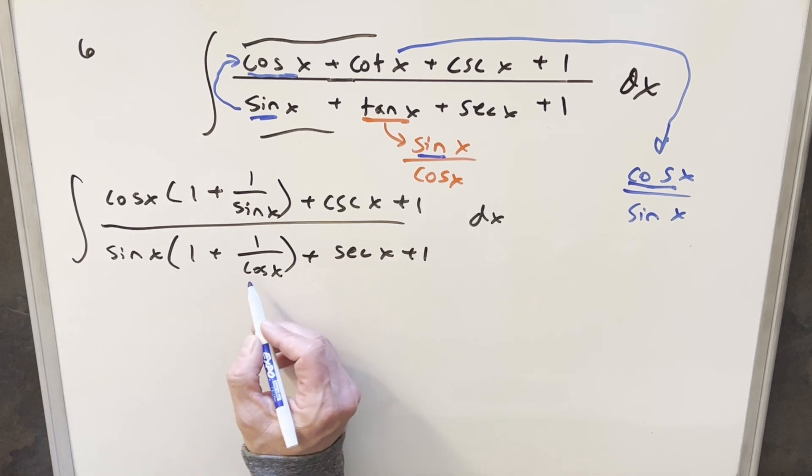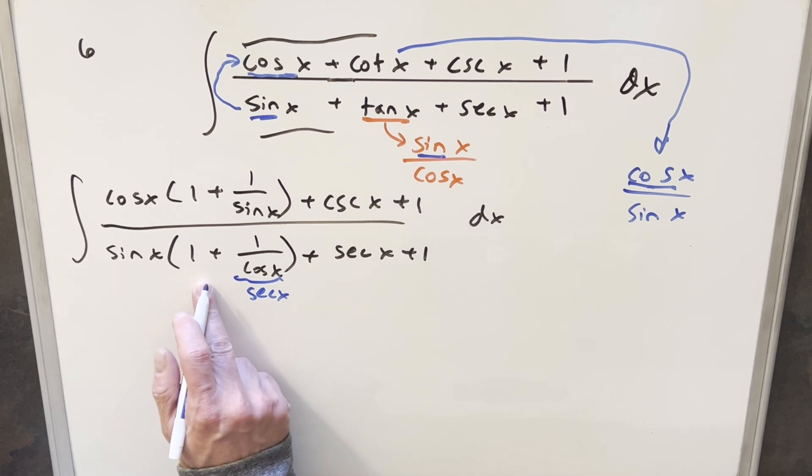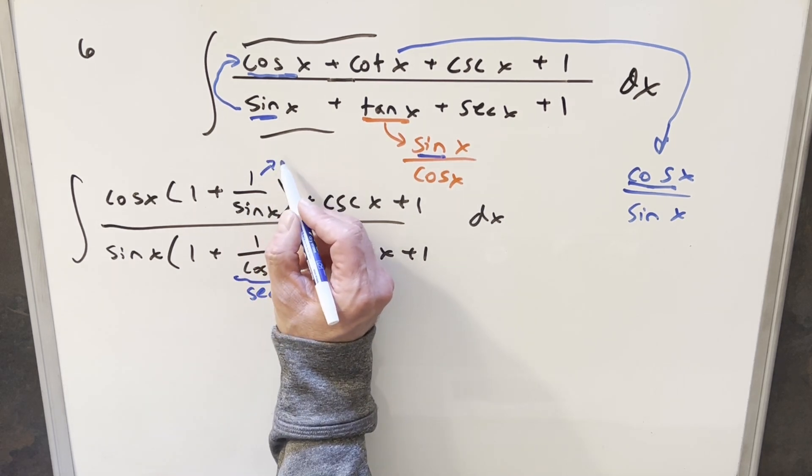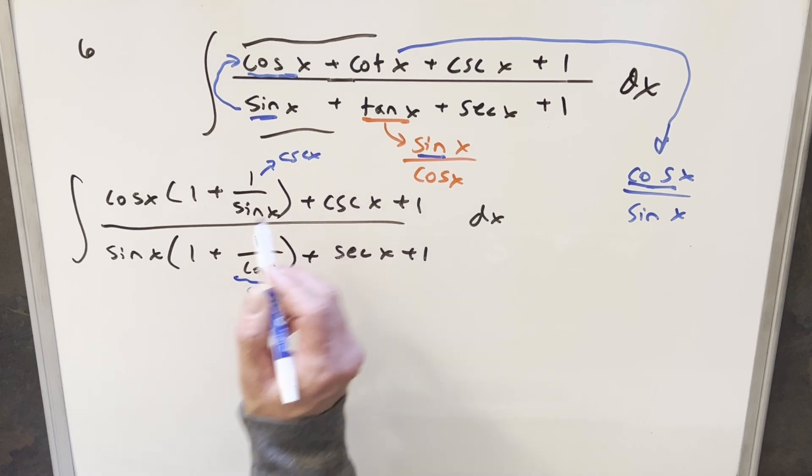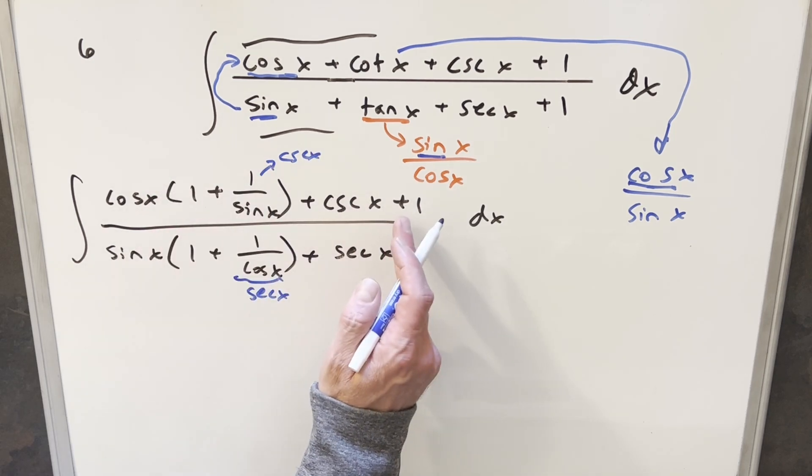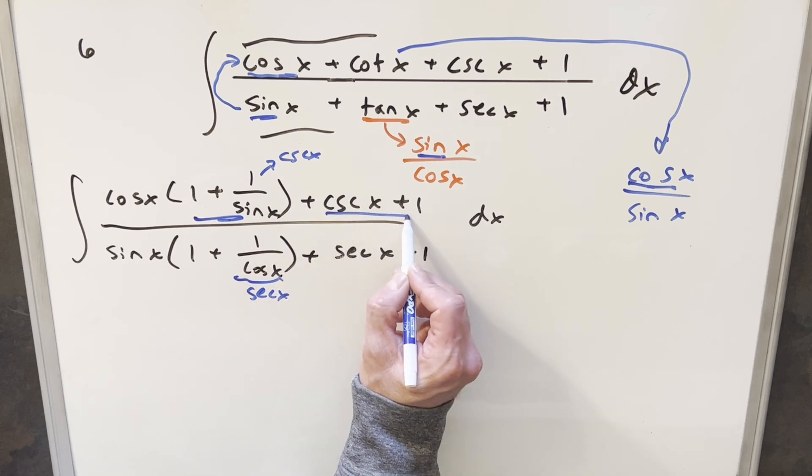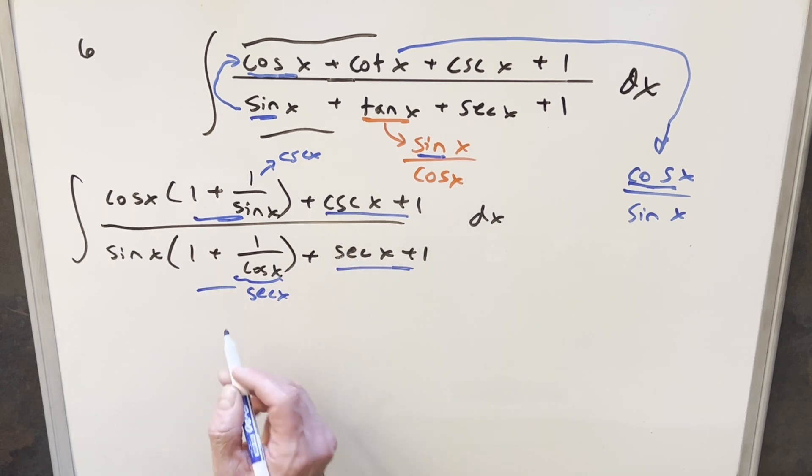But now this is pretty good because 1 over cosine x, this term right here is just secant x. And so we have secant x plus 1 here and secant x plus 1 here. And then same thing in the numerator, this 1 over sine x, this is just cosecant x. So we have 1 plus cosecant x here and here. So we can factor again because we have this in common and then we also have this in common.